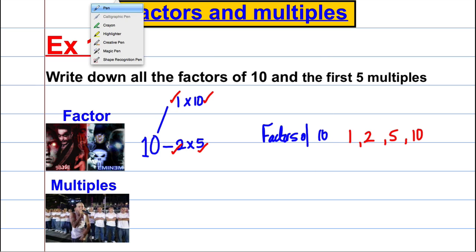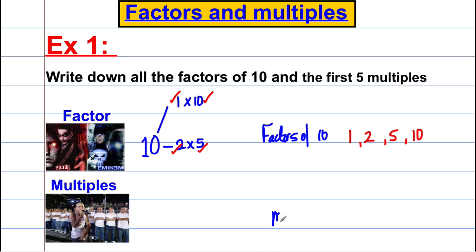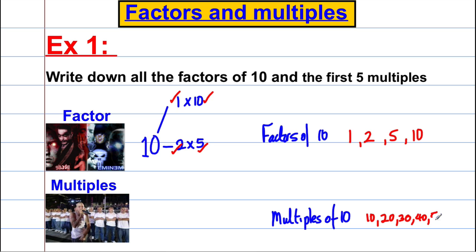The multiples of 10 are easy — they're just the 10 times table. We want the first five: 10, 20, 30, 40, and 50. And that's factors and multiples of 10 done.